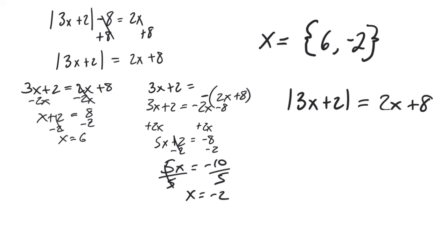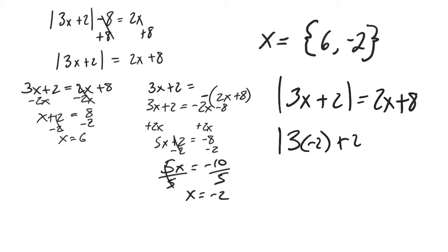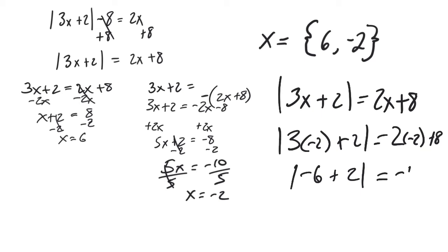I didn't mean to erase all that, but I'll write it out again. Absolute value of 3x plus 2 is equal to 2x plus 8. Now I'll plug in negative 2: 3 times negative 2 plus 2 on the left equals 2 times negative 2 plus 8 on the right. 3 times negative 2 is negative 6, plus 2 gives absolute value of negative 4, and negative 4 plus 8 is positive 4. Absolute value of negative 4 is positive 4, so that works too.